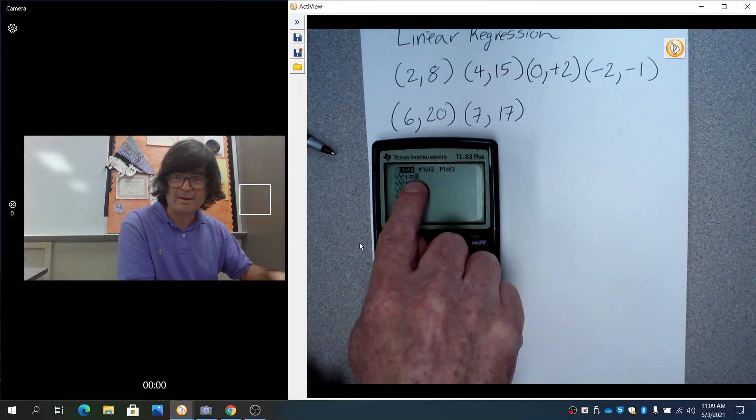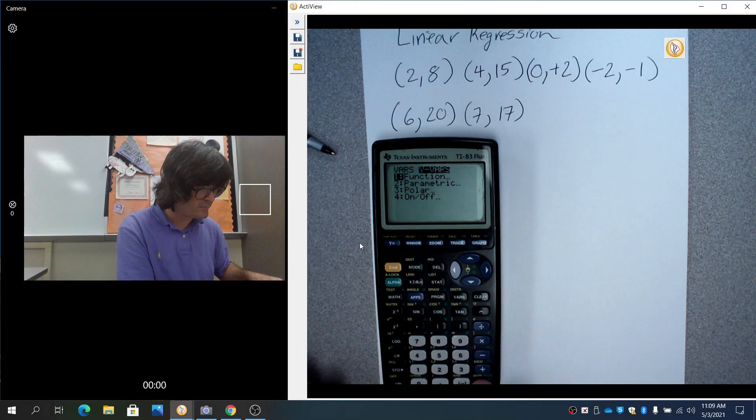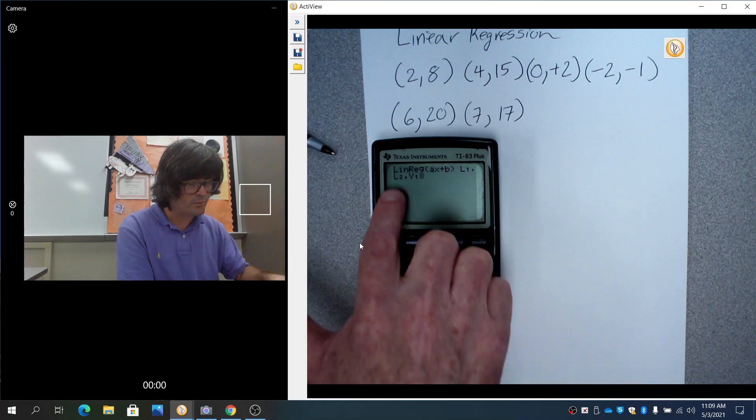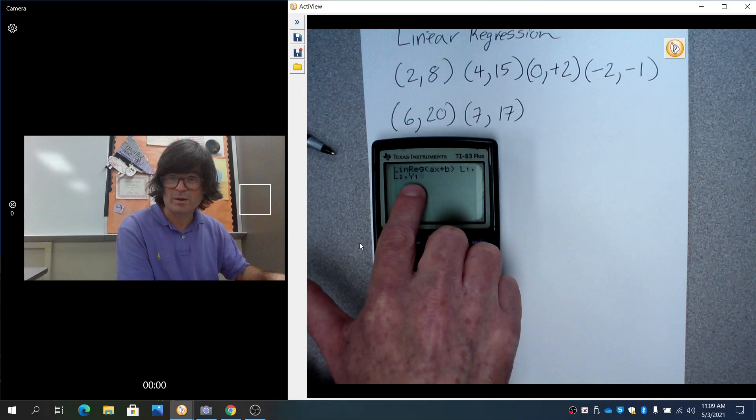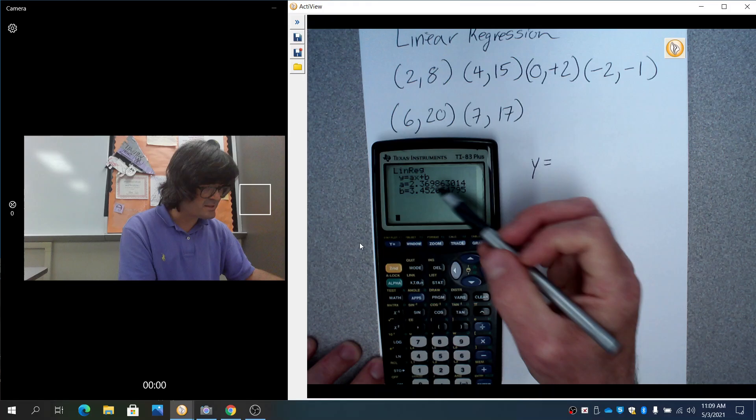And then watch this carefully. I'm going to do comma, I'm going to type Y1 because I want my equation to be automatically put right here in Y1 so it will graph. So x, y - I'm going to go to VARS, Y-VARS, hit ENTER on function, and then Y1. So what this is telling linear regression is pick the x's from list one, pick the y's from list two, and then put the equation in Y1. Hit ENTER.